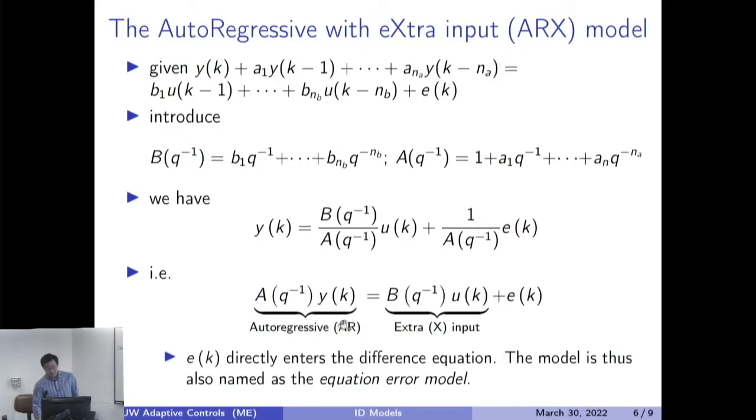This is so-called autoregressive with extra input model. Autoregressive means the concept that we discussed last time. If we have denominators in these transfer operators, then it's going to contain an autoregressive portion. You can see this yk and this delayed version combined together. And then on the right-hand side, extra input, meaning we have an extra excitation going through the dynamical system.